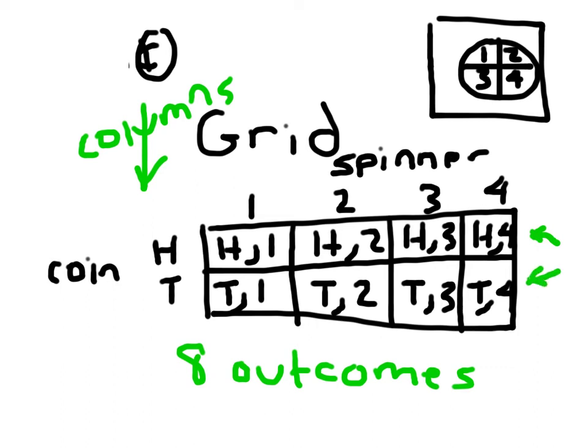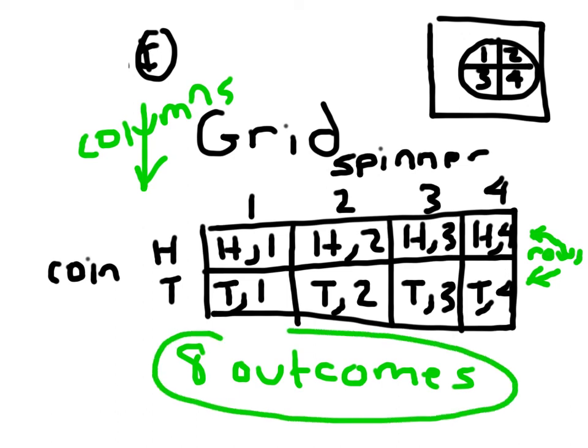Those are rows of my grid. That there, that there, all the way across, both of those are called rows. Two rows, four columns, eight possible outcomes. You'll notice this is two. This is four different columns. Two times four does give you eight.